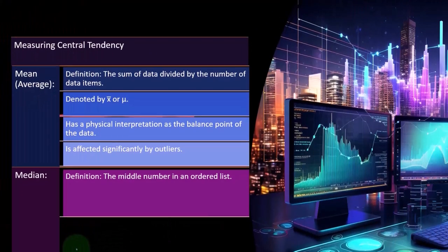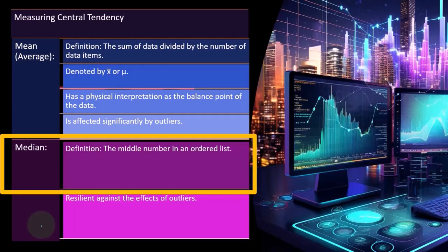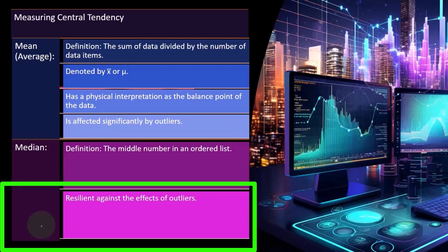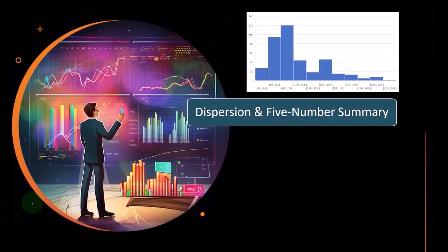Whereas when we look at the median, definition: the middle number in an ordered list. So if we list our numbers from smallest to highest, pick the one in the middle. Now we've got the median, resilient against effects of outliers. That's one of the benefits of the median is that the big outlier is not going to have a big impact on the median as it will oftentimes with the mean or average.